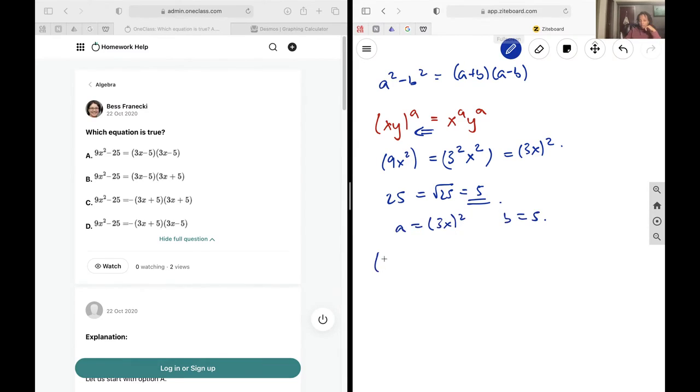So I will get that 9x squared minus 25 is going to give me 3x plus 5 multiplied by 3x minus 5. Now we just read through for our first one. If you expand this out, for option A you will get 9x squared minus 15x minus 15x plus 25.